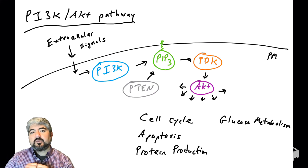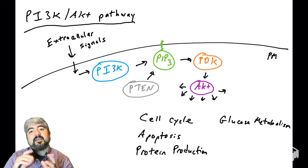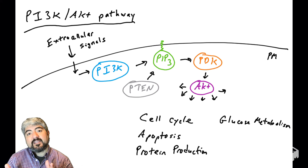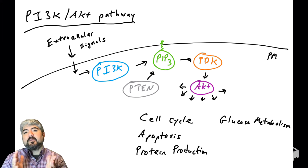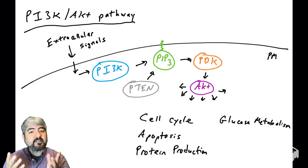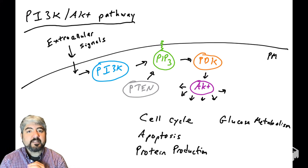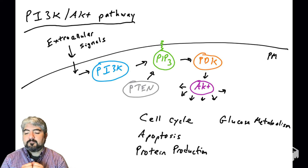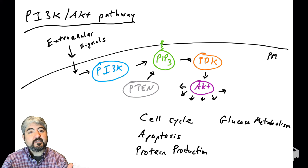In this video we're going to talk about a very important signaling molecule in the PI3 kinase AKT pathway, indicated here as PIP3. We're going to see what it looks like before it becomes PIP3. This molecule is very important in transmitting signals from the outside of the cell into intracellular signaling pathways. Let's see how this signaling molecule is created and helps send signals into the cell.